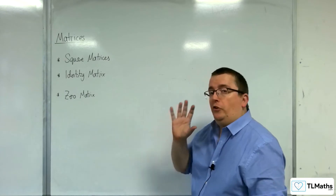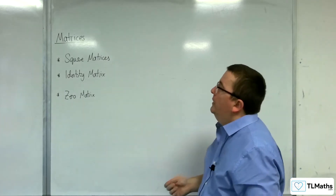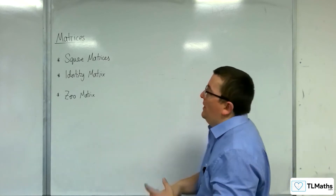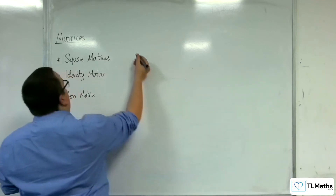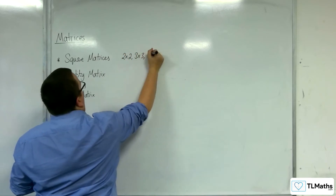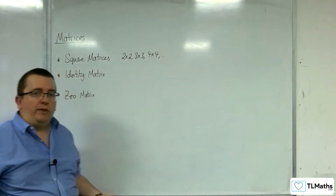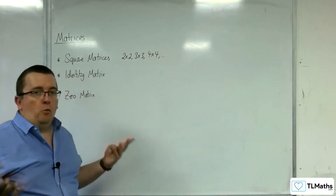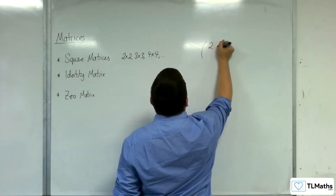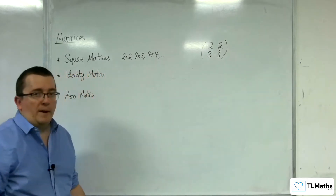In this video I just want to introduce you to a few special matrices. The first one is a square matrix, and this is quite basic. The concept is that a 2 by 2, or a 3 by 3, or a 4 by 4 matrix — all of these would be square matrices, whereas a 4 by 5 wouldn't be. So an example of a square matrix would be something like 2, 2, 3, 3. That's a square matrix.